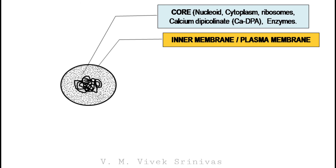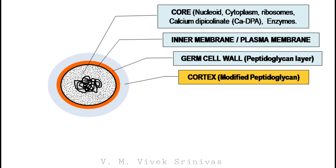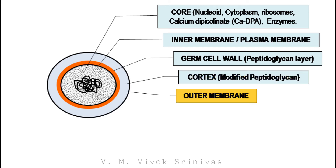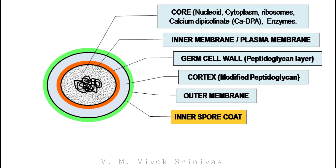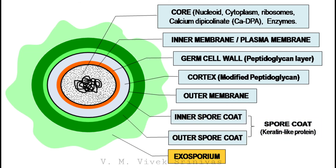This core is surrounded by the inner membrane, or the plasma membrane. This in turn is surrounded by the germ cell wall, which is rich in peptidoglycan. Then the modified peptidoglycan layer called the cortex surrounds the germ cell wall. The cortex is surrounded by the outer membrane. This is again surrounded by the inner spore coat and the outer spore coat — together termed as the spore coat — which is rich in keratin-like protein. Once this protein coat is formed over the cortex, the spore gets matured. Some spores form an additional layer called the exosporium.